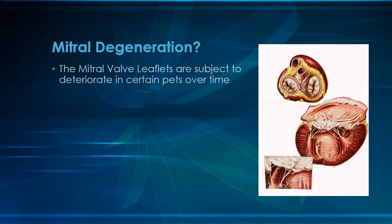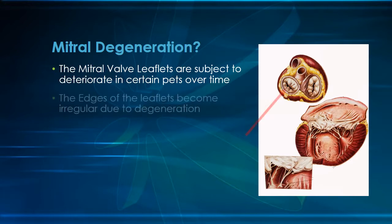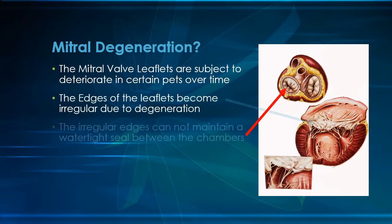In some dogs, the mitral leaflets, and sometimes the tricuspid leaflets, deteriorate with age. Instead of having smooth edges, the edges become irregular and gnarly. The irregular edges do not form a watertight seal between the atrium and the ventricle when they close, as you can see in the picture to the right.